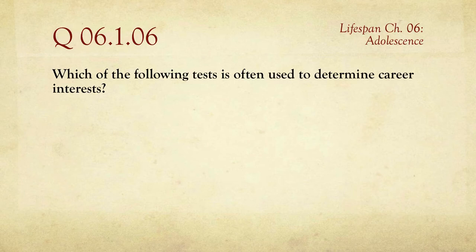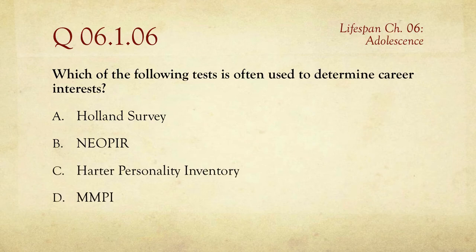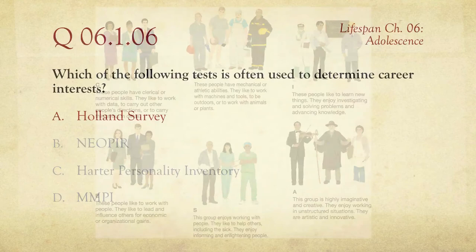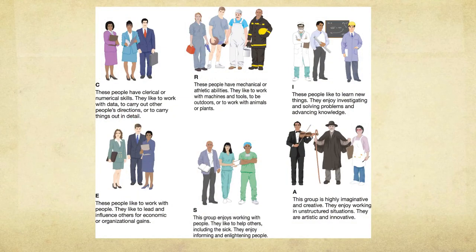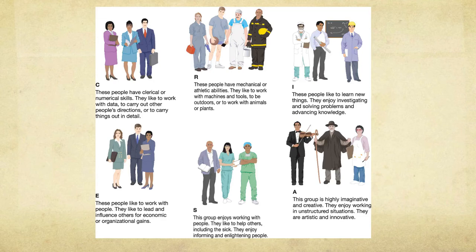Question number six: which of the following tests is often used to determine career interests? The choices are the Holland Survey, the Neopier, the Harder Personality Inventory, or the MMPI. Most of these are personality tests; the one that hooks up directly with vocational interest is the Holland Survey. We've seen this chart before — there are six types: Conventional (clerical, likes to order things), Realistic (working with hands), Investigative, Enterprising (business types), Social, and Artistic.